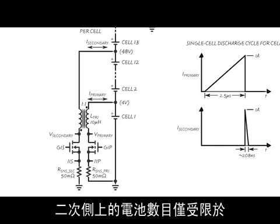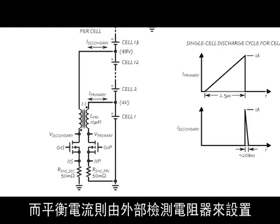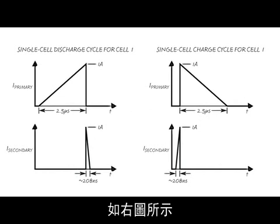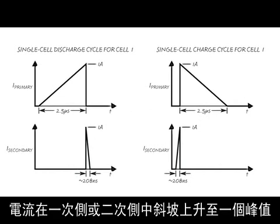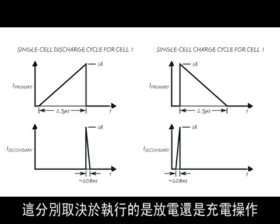The number of cells on the secondary side is limited only by the breakdown voltage of the external components, and the balance current is programmed by external sense resistors. As shown in the graphs to the right, the current is ramped up to a peak value in the primary or the secondary, and then subsequently ramped down to zero in either the secondary or primary, depending on whether discharging or charging respectively.